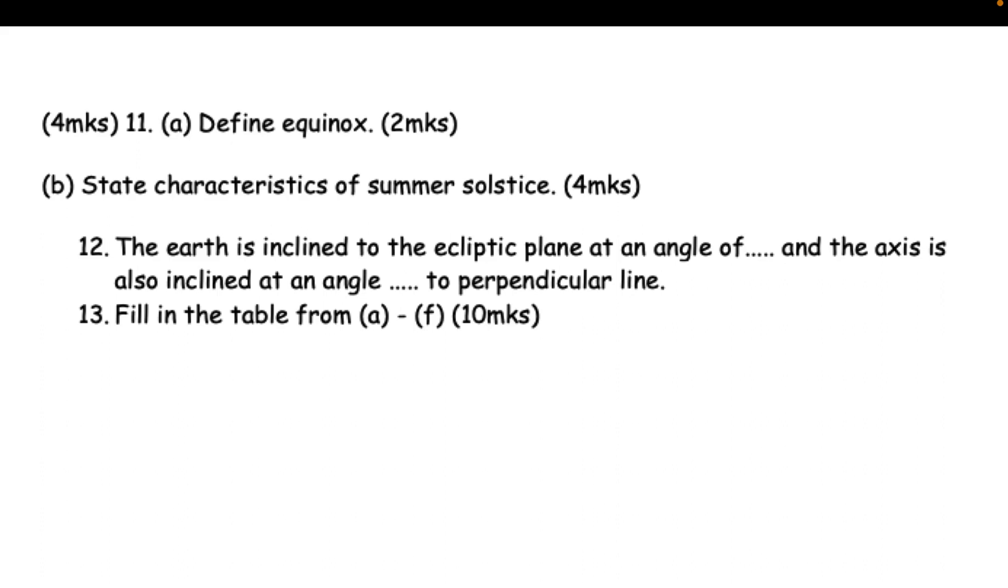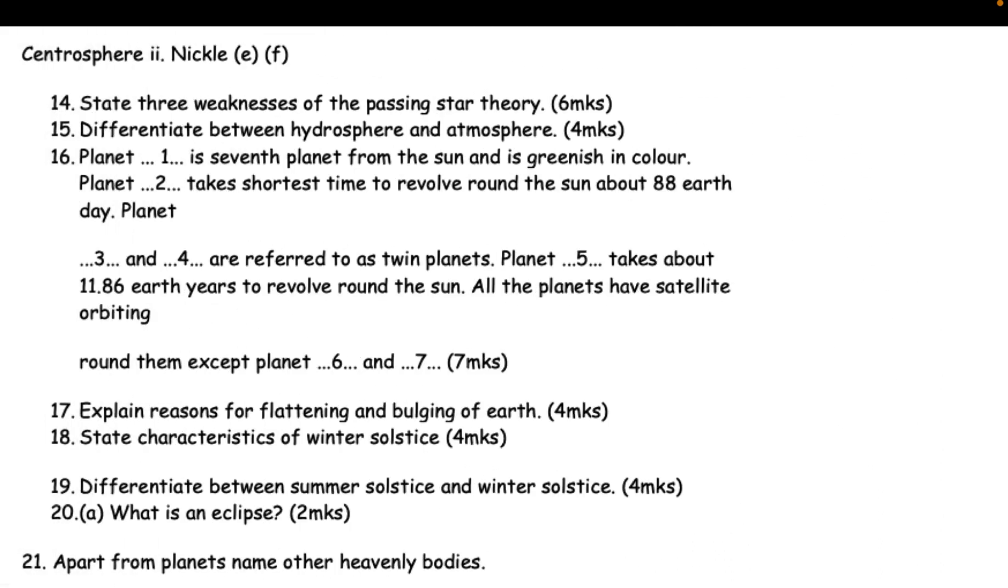11. (a) Define equinox (2mks). (b) State characteristics of summer solstice (4mks). 12. The earth is inclined to the ecliptic plane at an angle, and the axis is also inclined at an angle to perpendicular line (4mks). 13. Fill in the table from A to F (10mks): property, layer, major...